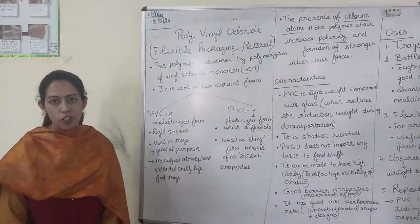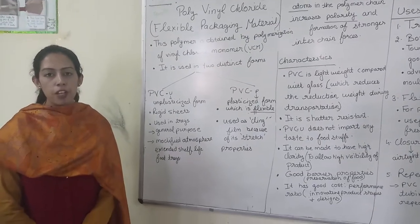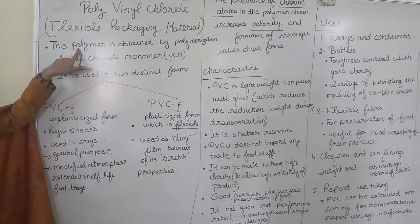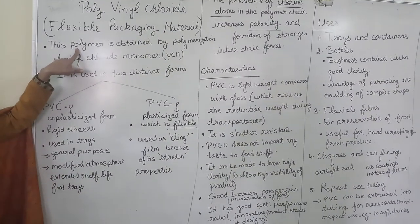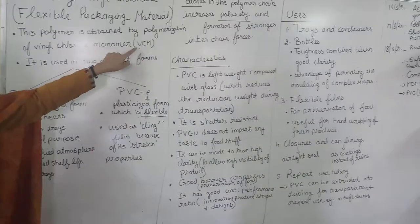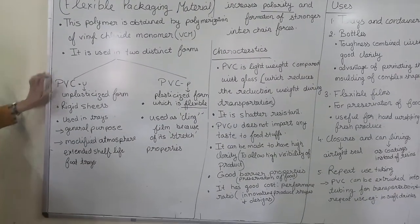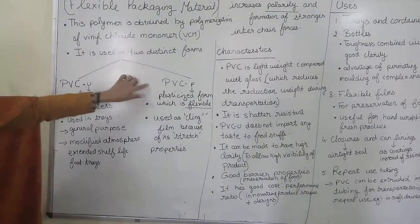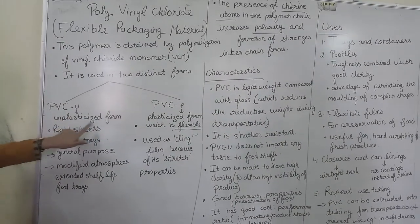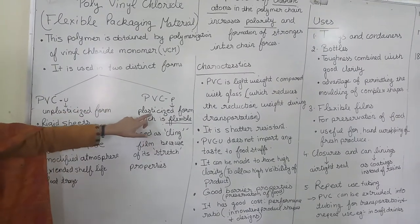Today we are going to cover the topic of flexible packaging material, that is polyvinyl chloride. Polyvinyl chloride is a polymer obtained from the polymerization of vinyl chloride monomer. It is used in two distinct forms: PVC-U and PVC-P, where U stands for unplasticized form and P stands for plasticized form.